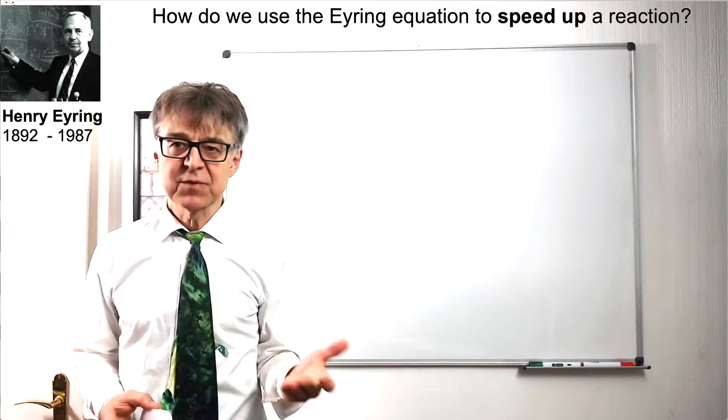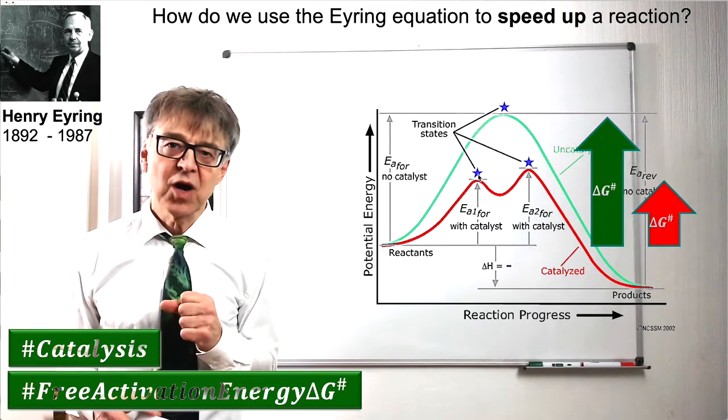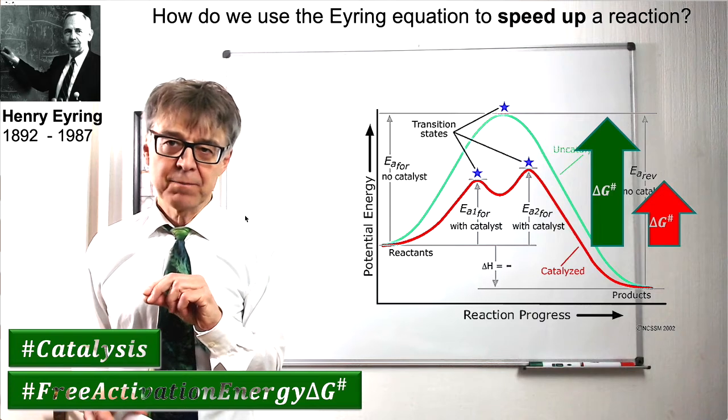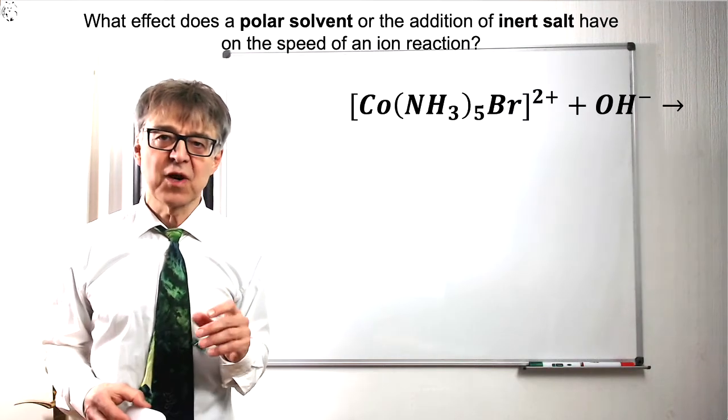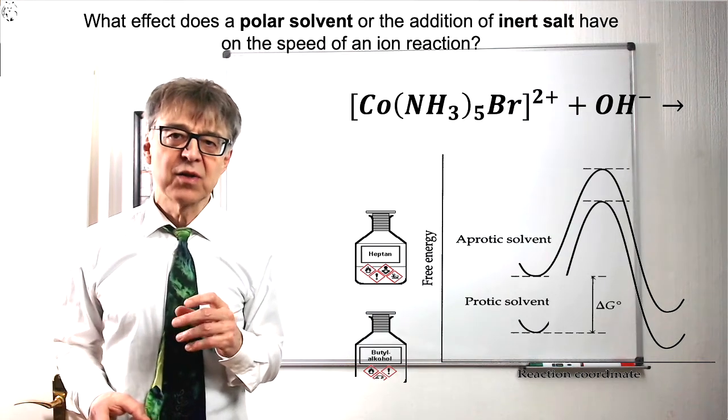For example, a chitalist works in such a way that the reaction proceeds via a different, often more complicated path with a smaller activation energy. The iron theory can also be used to quantify the influence of the solvent and the influence of ionic strength on reaction rate.